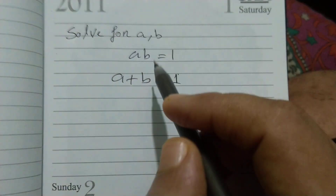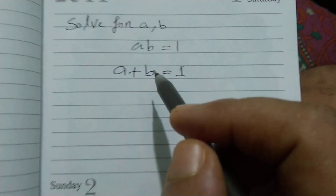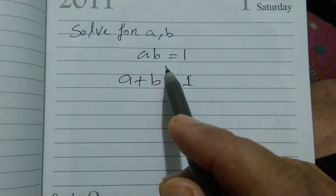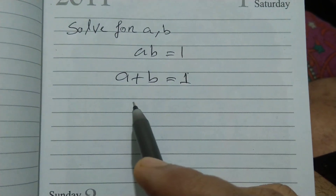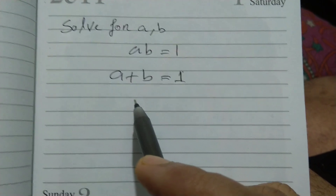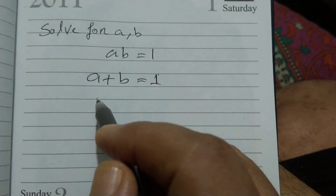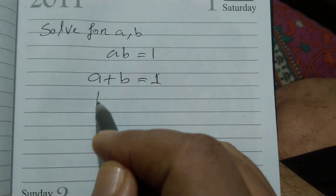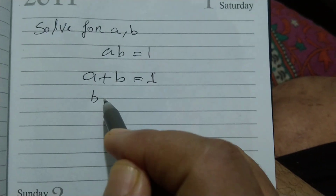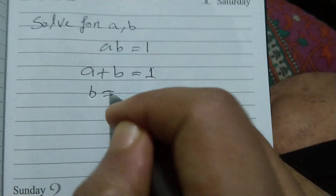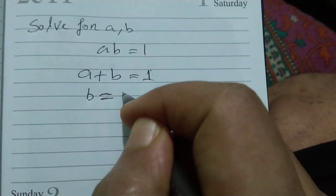Hello dear friends, welcome to my channel. Today's discussion is a·b = 1, a + b = 1. This problem is from Olympiad examinations, but at the school level it is very simple.